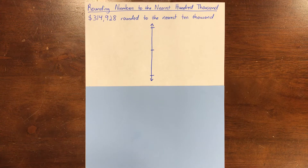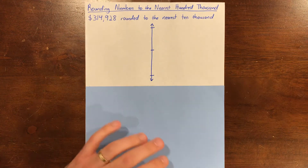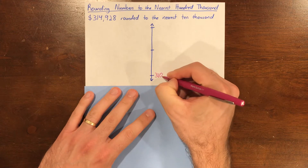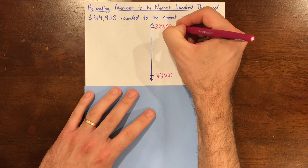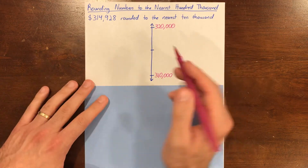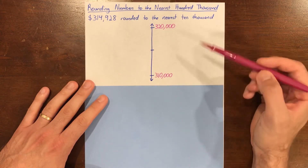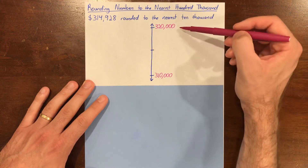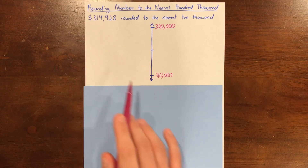Say it out loud. The landmark numbers are going to be 310,000 and 320,000. The digit in the 10,000 place is a 1, so our number is between 1 ten-thousand and 2 ten-thousands — and of course we have our 300,000 still in front of those 10,000s.